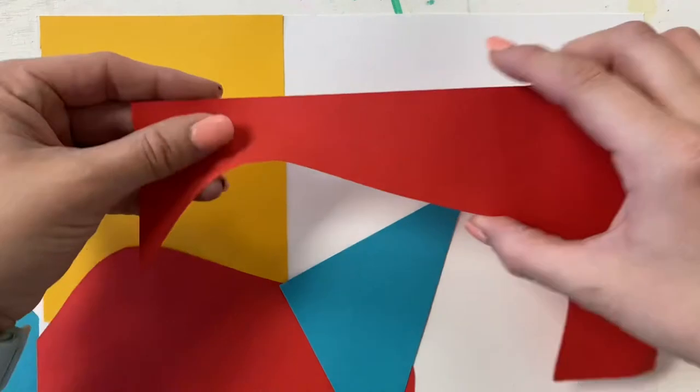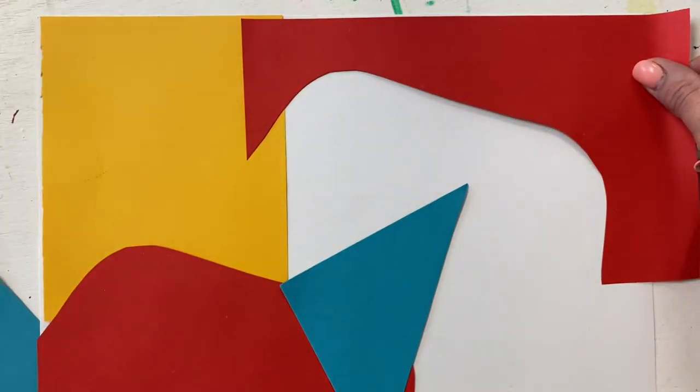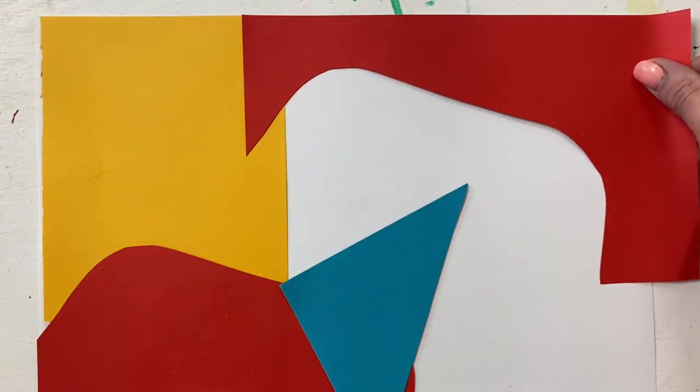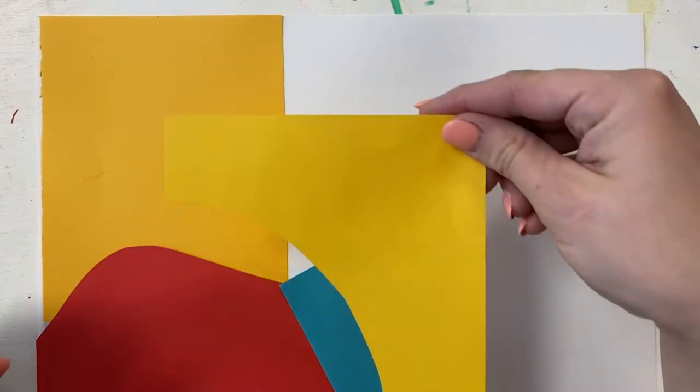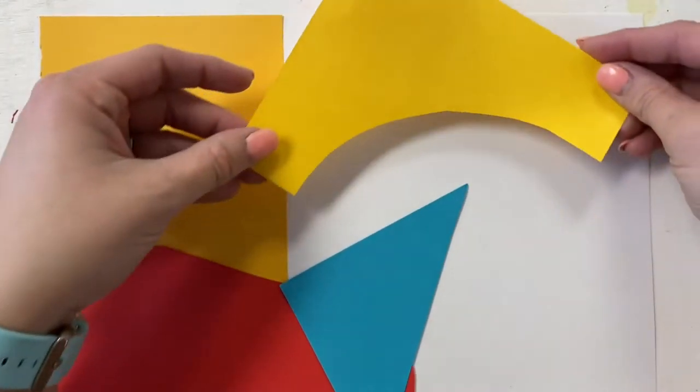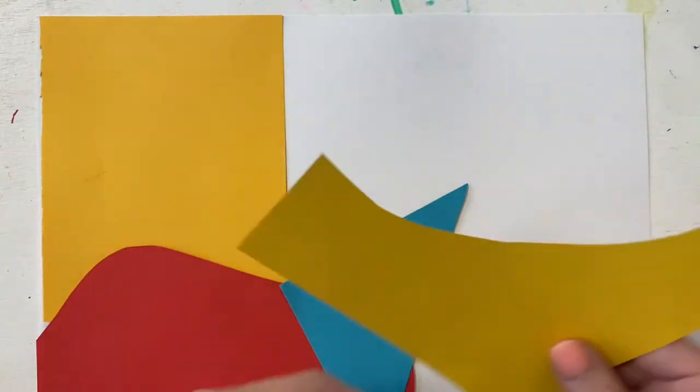This scrap that I have from my red, that might be interesting in my artwork too. After you glue down your first three pieces, you can go back to the scrap bins or the other papers. Maybe you find a scrap that someone else cut and you like the shape that it makes and you want to use their scrap. You can do that.